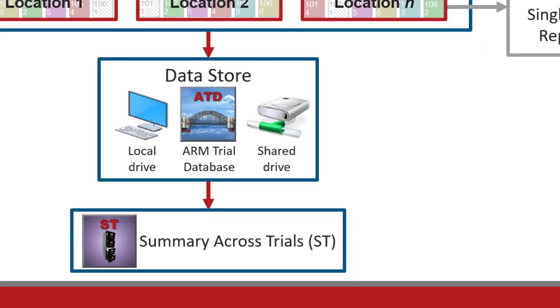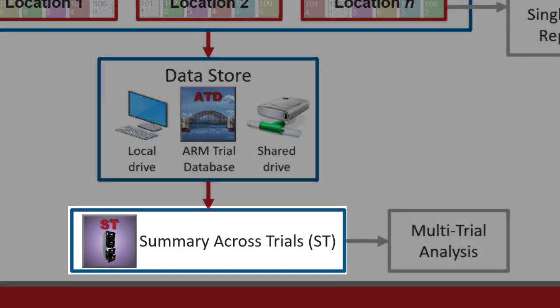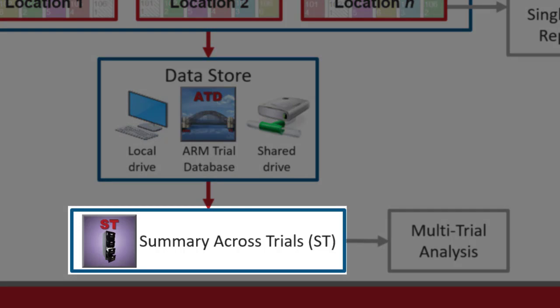Summary Across Trials reads stored trial information and performs multi-trial analysis. Researchers, product managers, and information technology groups use it to summarize a set of research trials. The results can be used to measure consistency of research results, to improve the design of future trials, and provide critical information for product release and use.